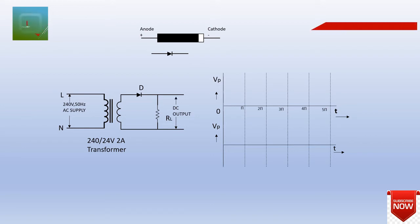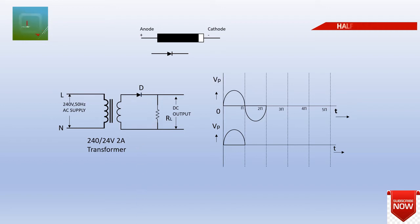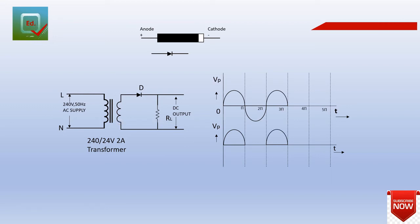This is the positive half cycle. The current flows through the diode and the process continues. This is the DC output. During the negative half cycle, current does not flow — this is the output.